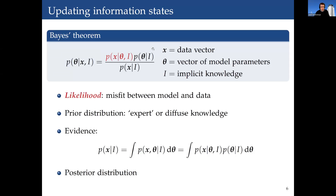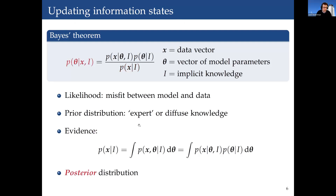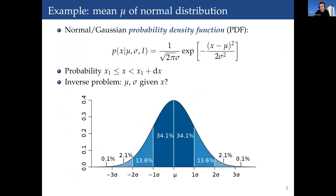Bayes' theorem states that the posterior distribution is simply proportional to the product of the likelihood — which measures the misfit between model and data — multiplied by the prior probability distribution, which encodes what you know about the parameters before the measurements. In the denominator, the evidence gives the probability of the data given a certain measurement model.